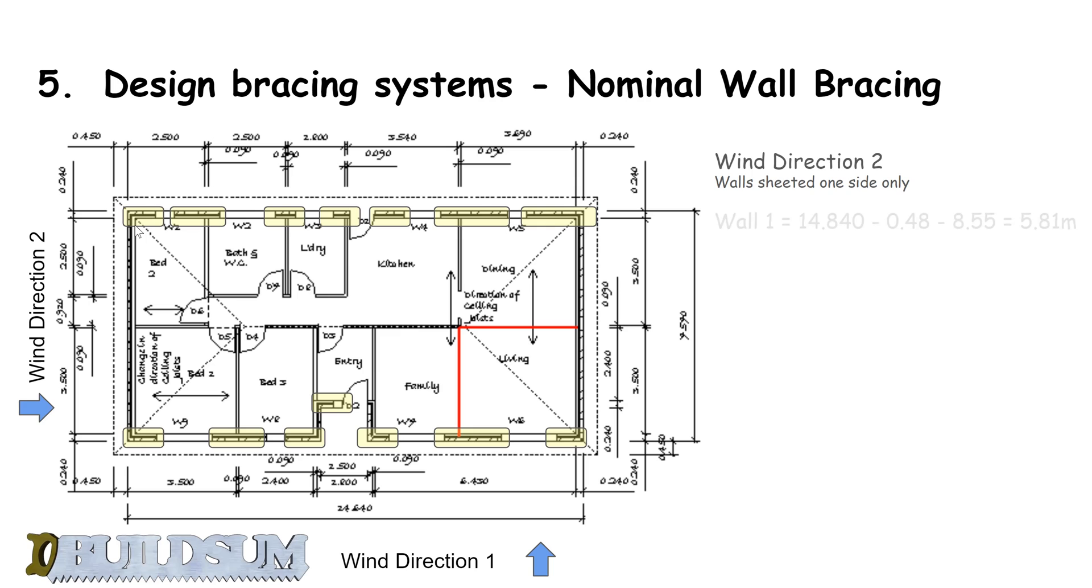We've got this wall here which is 14.840 meters long. I'll take off 0.48, which is the cavity and the brickwork - take that off twice for both ends. Then I've taken away all the window openings, which I've added up to 8.55. So I take all that away and get effectively 5.8 meters from this wall.